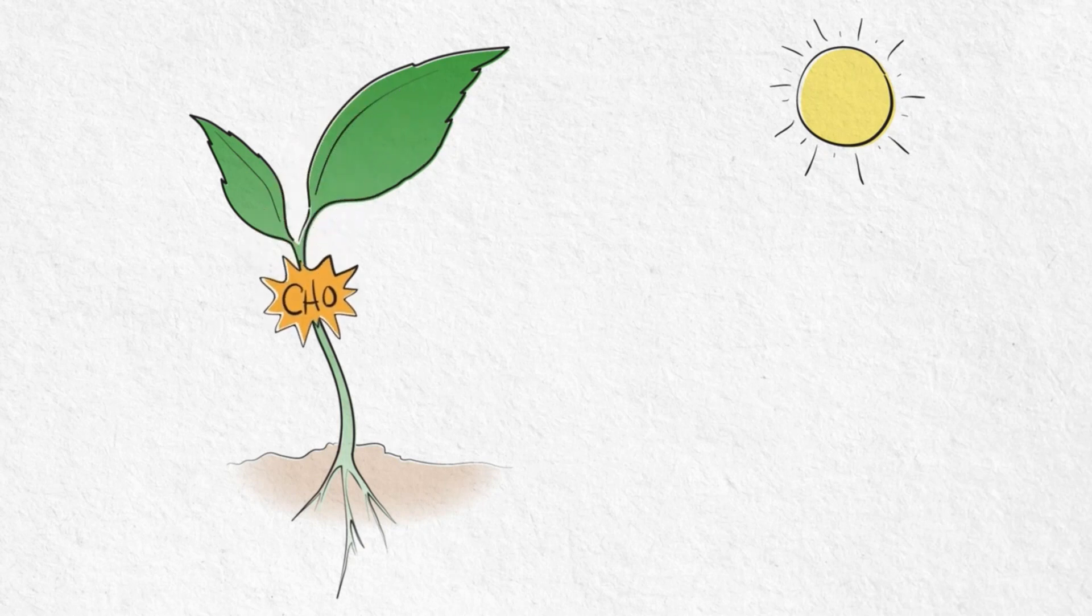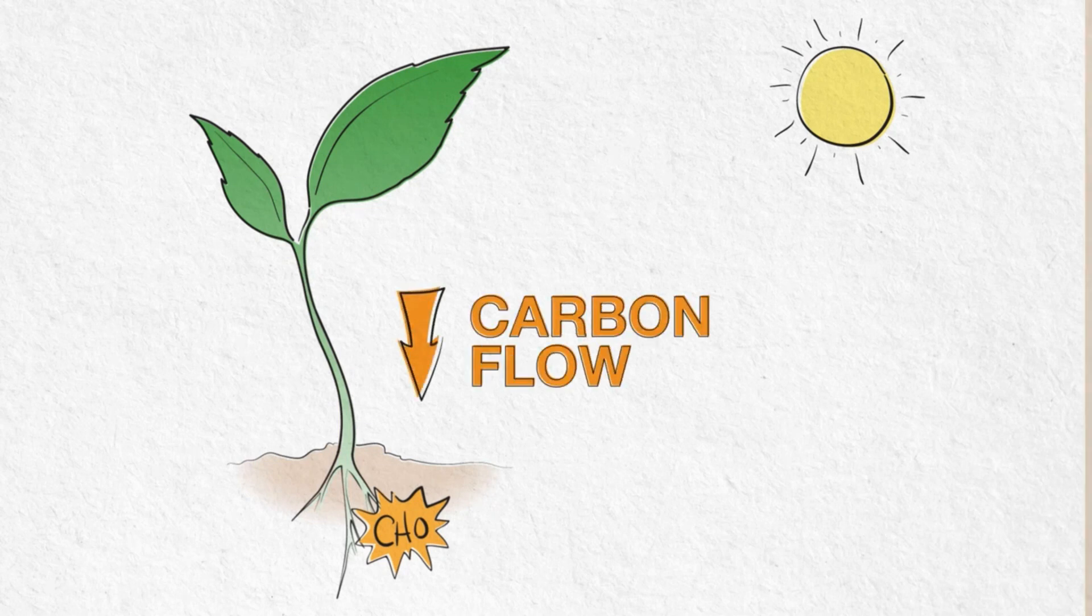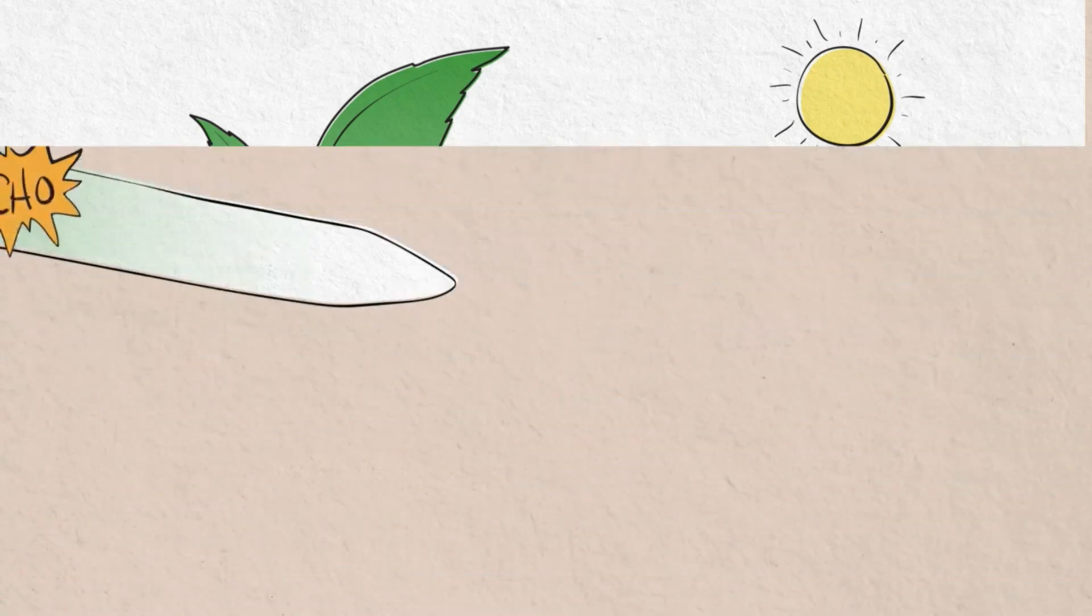This molecule now moves downward from the leaves to the roots, carrying energy. This is the carbon flow of the plant, which fuels all plant processes.